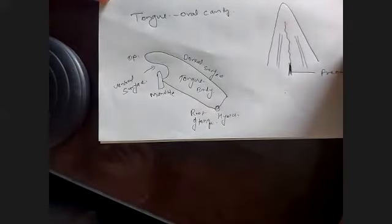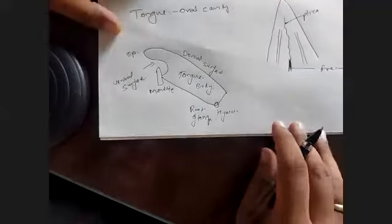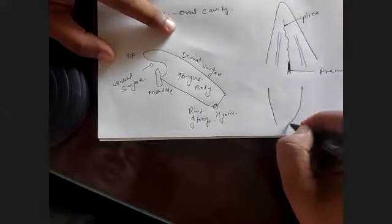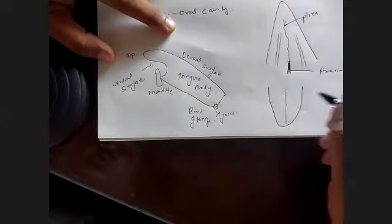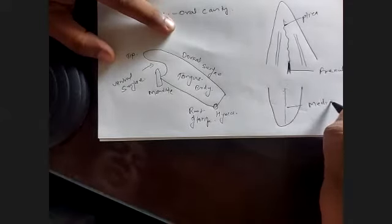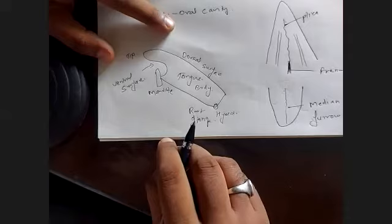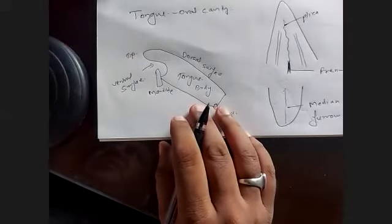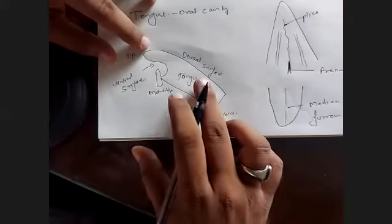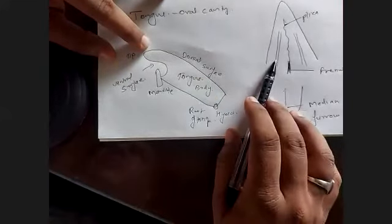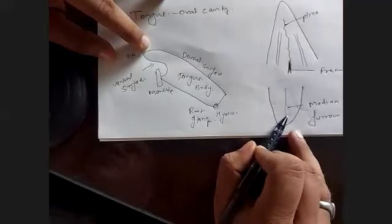On the ventral surface, we also see the lingual veins. The frenulum continues as a fibrous structure. The dorsal surface of the tongue may show a median furrow. So these are the external features of the tongue: the root, the tip, the body, ventral surface, frenulum, dorsal surface, and median furrow.